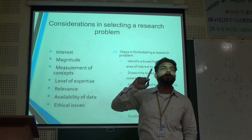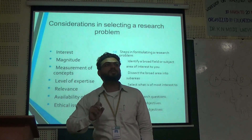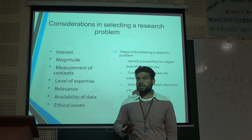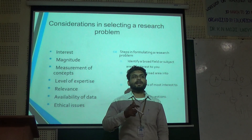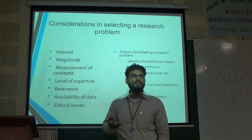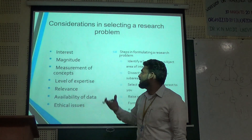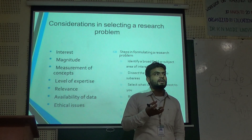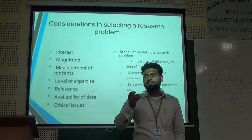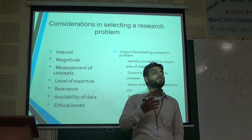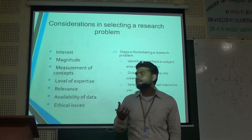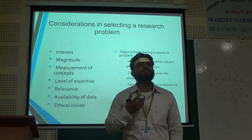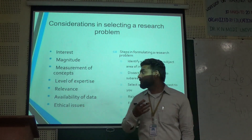First is interest — always do your research on your own interest. If someone forces you to conduct research in an area that is not your interest, you cannot give your 100% effort. Second is magnitude — it is a measurement of how much research you can conduct, that is, your level. I always say efficiency and effectiveness — you cannot match that effort if it is not on your interest. Measurement of concept means what is your conceptual idea — you have to measure how much expertise you have in a particular research area.